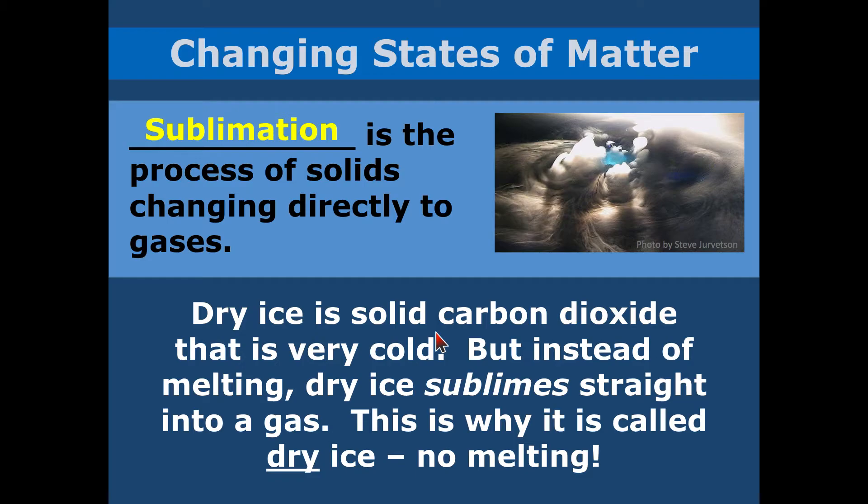Dry ice is a good example — it's solid carbon dioxide and it's very cold. When it turns directly into a gas, that process is called subliming.